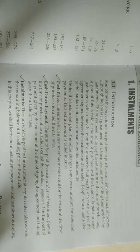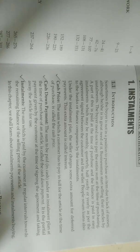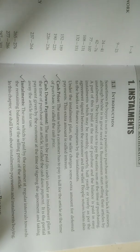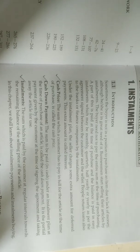[Local language explanation: The teacher re-explains the washing machine instalment example — that if you don't have enough money to buy the washing machine outright, you pay a portion now and the remaining amount in instalments over time, as agreed with the shopkeeper.]